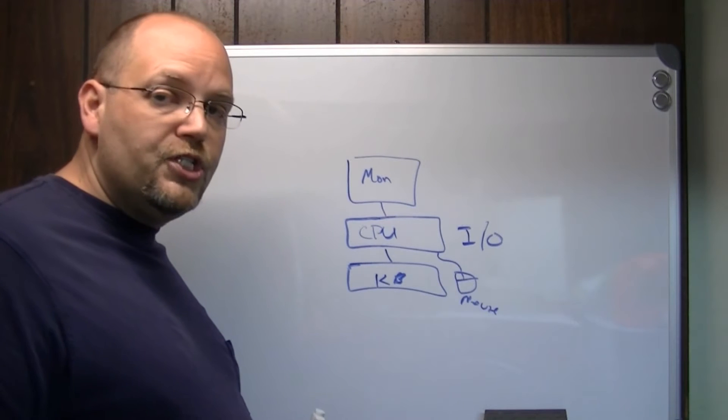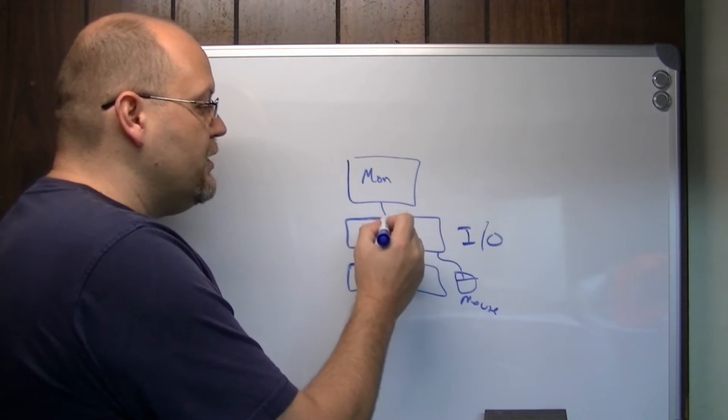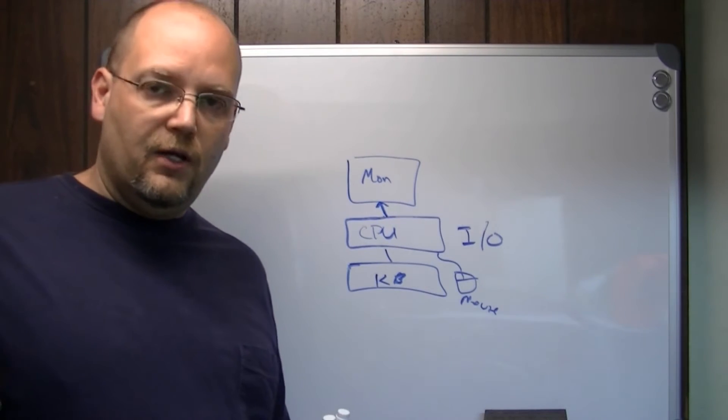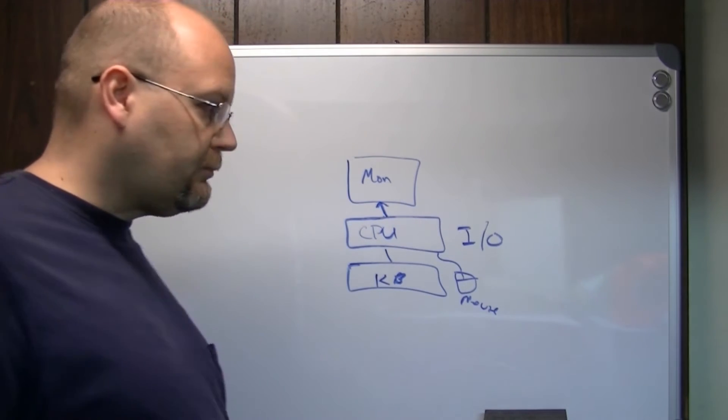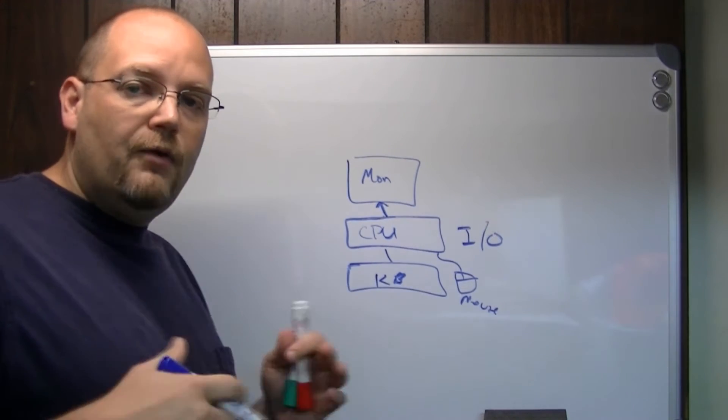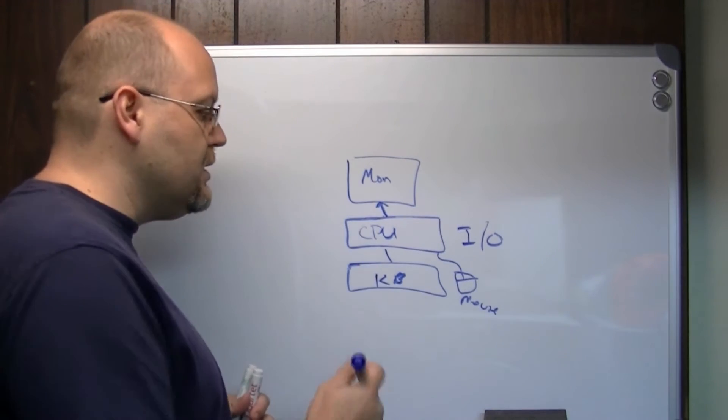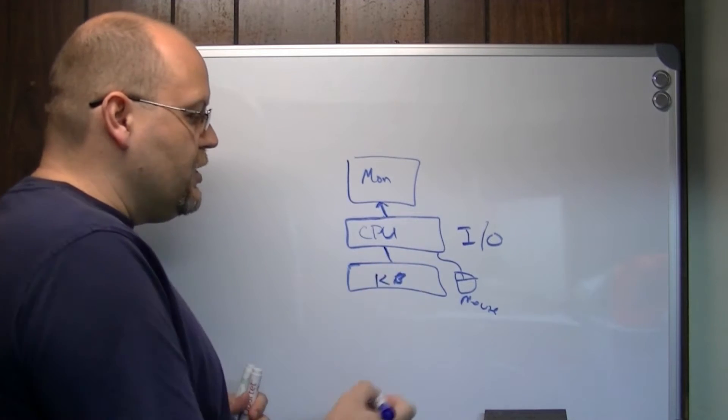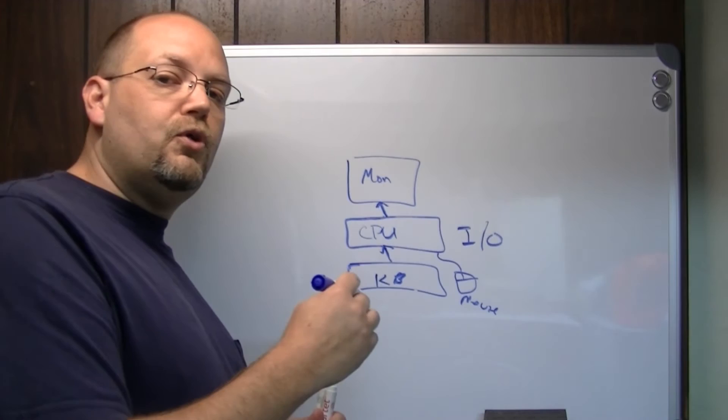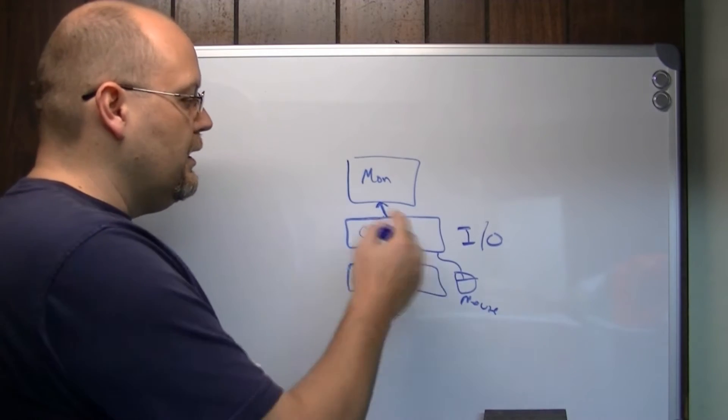So a monitor, generally speaking, is an output device, because the signal goes from the CPU to the monitor to be displayed on the screen, so you can see it. Now, and I'll go back and explain some of this, how that compares to today, in a few minutes, the keyboard is generally an input device, because it sends signals into the computer, into the CPU, and for processing.